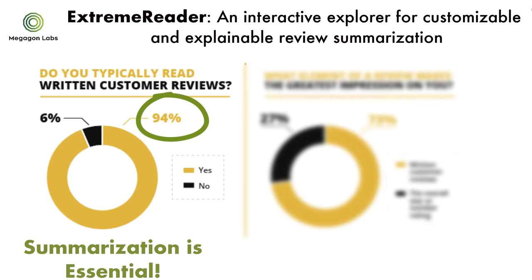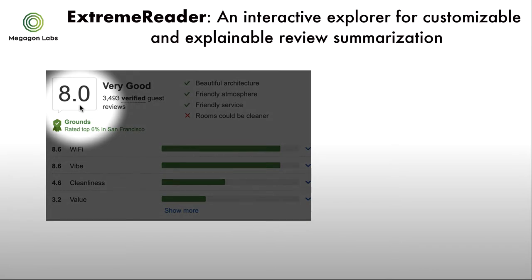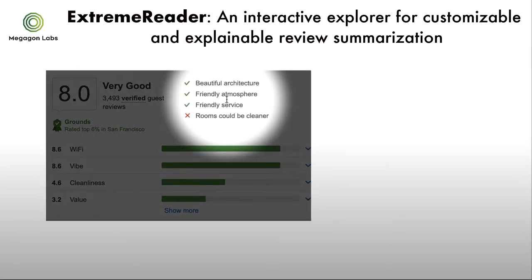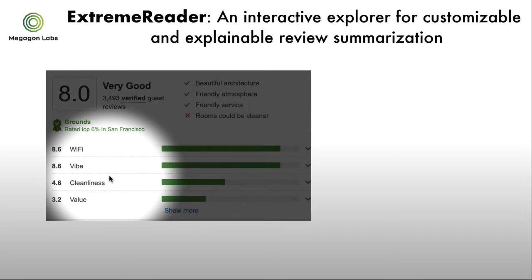Before we dive into Extreme Reader, let's first take a look at why existing review summaries are insufficient in helping users during the decision-making process. Here is the hotel review summary on one of the major travel booking websites. This summary includes three major components. First, it provides an aggregated score indicating the overall opinion from existing reviews. Second, it provides the frequently mentioned phrases highlighting the key pros and cons of the hotel. Lastly, it provides the aggregated score for a few pre-defined aspects.